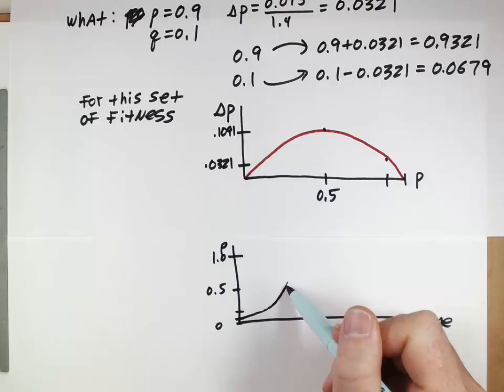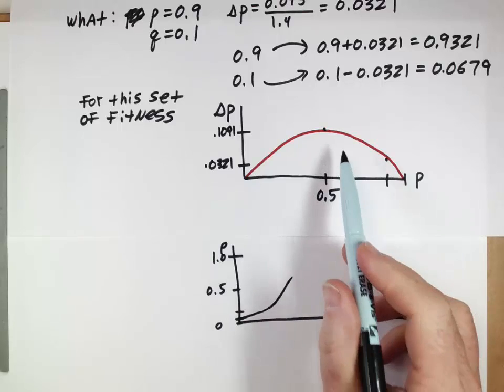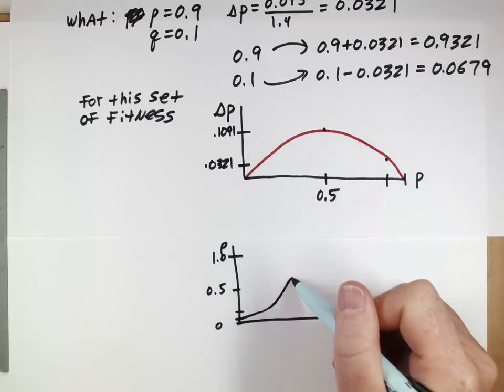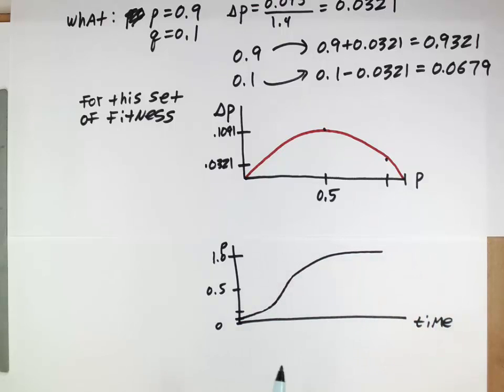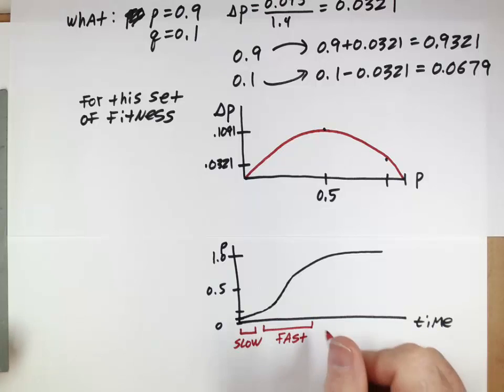After p gets larger than that, it'll start slowing down, because delta p is now declining, and you'll get something more like this. And so in fact, we can kind of look at a few zones of change here. At the beginning, this is essentially a slow rate of evolution. The value of p is changing not by much. These intermediate values, now delta p is larger. The frequency of p is changing more quickly. This is like fast evolution, and then we have slow evolution after this.